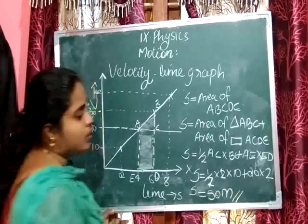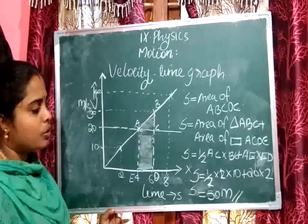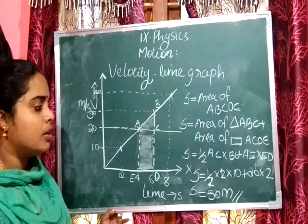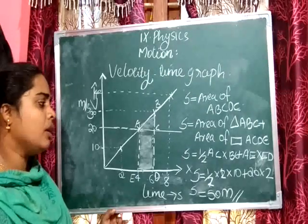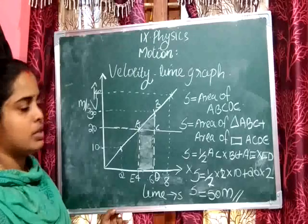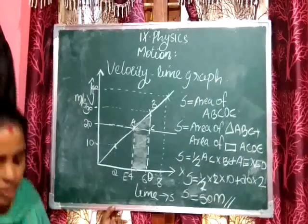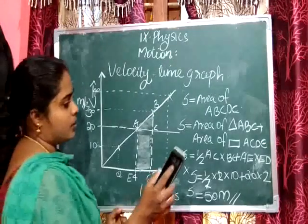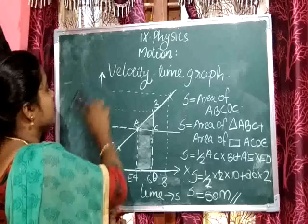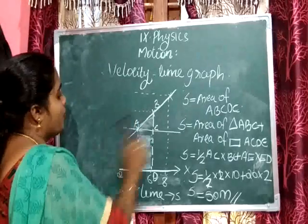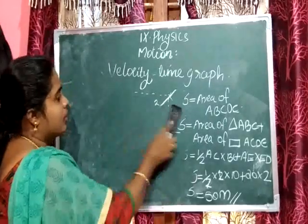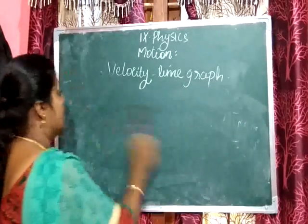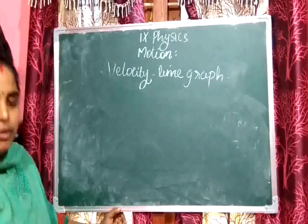The distance travelled by the object is equal to 50 meters. In this way, we can calculate the distance travelled by the object from the velocity-time graph. Next, we will see the velocity-time graph for uniform motion or uniform speed.